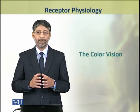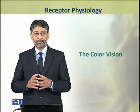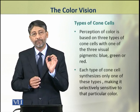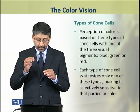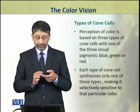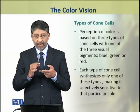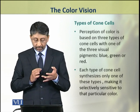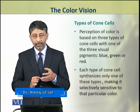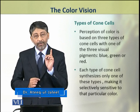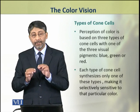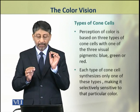Dear students, in this topic we shall discuss color vision. The perception of colors is based on three types of cone cells. These cone cells have one of three color pigments — a cone cell may have blue color pigment, it may have green, or it may have red color pigment. As a result, there are three types of cone cells: blue, green, and red. Each cone cell synthesizes only one of these three pigments, not all three, so each cone cell is selectively sensitive to a particular color range.